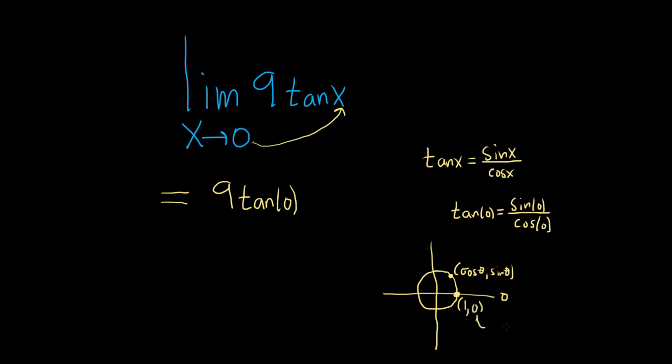So the y-coordinate is 0. That means that the sine of 0 is equal to 0. So this would be 0 over, and then cosine of 0 is the x-coordinate. So that's 1. So it's 0 over 1.